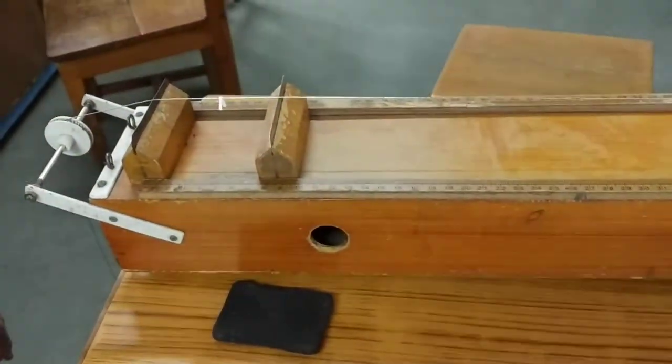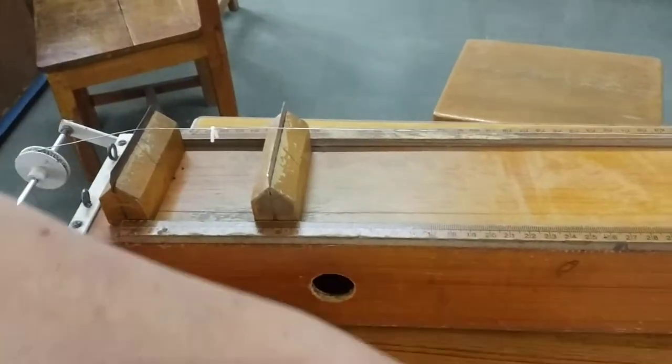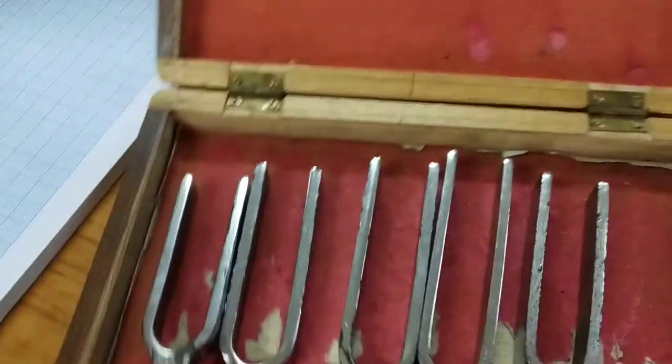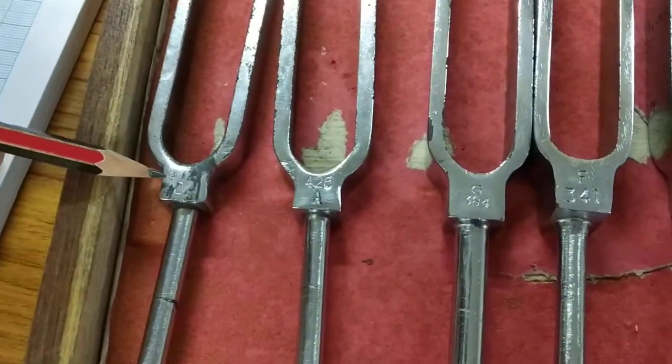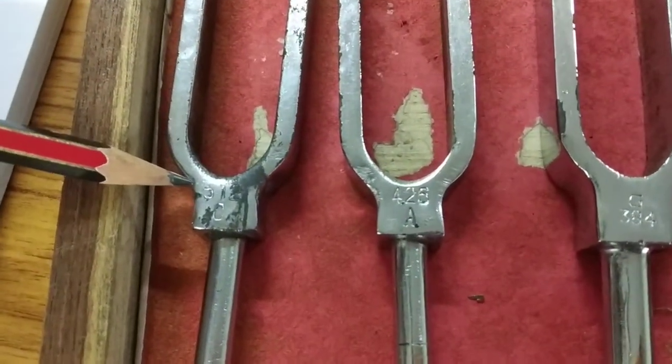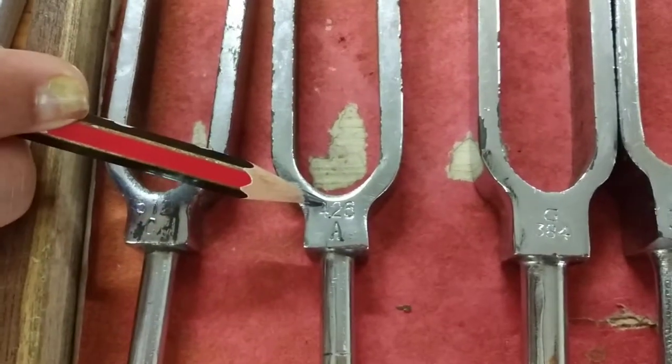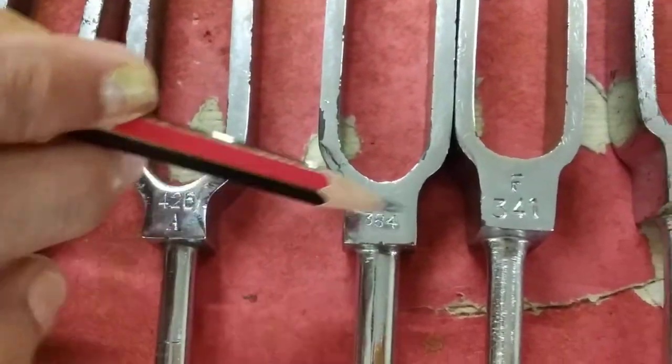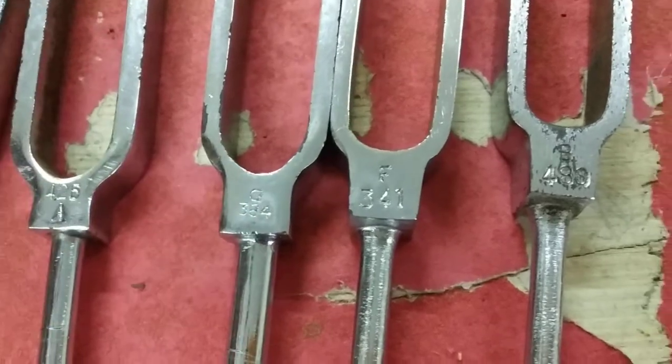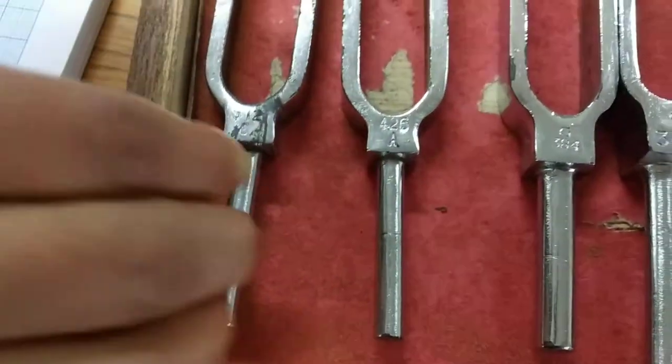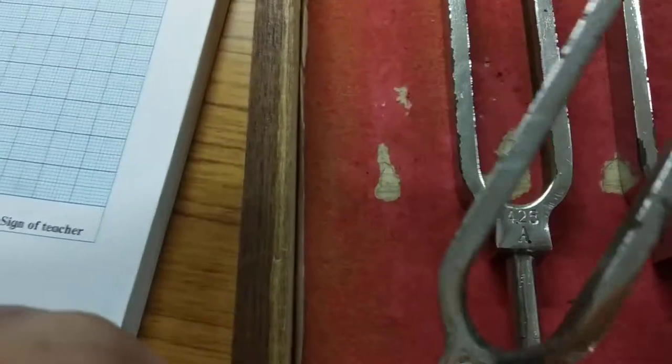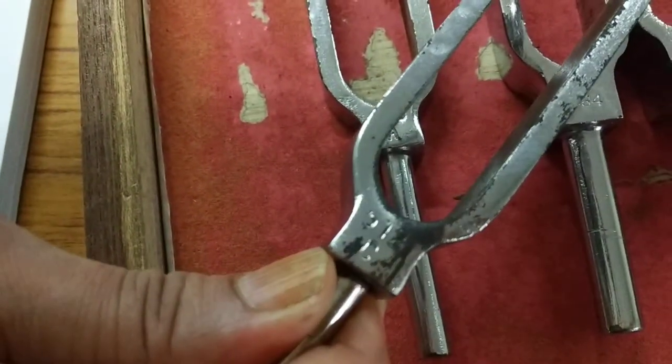Now, let us take a radio. We have a set of tuning forks here. The tuning forks are having various frequencies. This is 512, this is 425, 384, 341. We take it in the decreasing order. Now, you take the highest order tuning fork, that is 512.